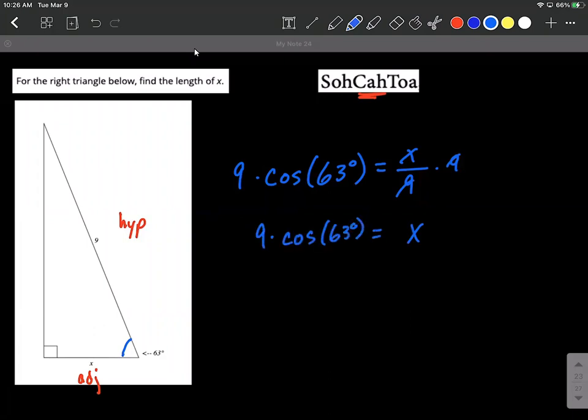We can get an approximation by putting this into our calculator. Remember to make sure that your calculator is in degree mode by pushing the mode button. Mine's about the third option, make sure it's in degree mode, and then punch in 9 times the cosine of 63. I got this to be 4.09.